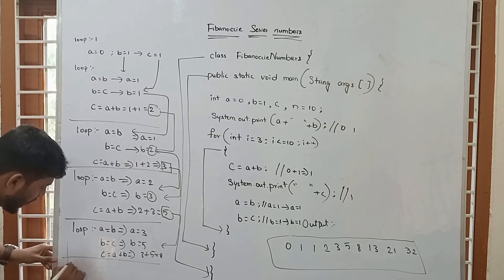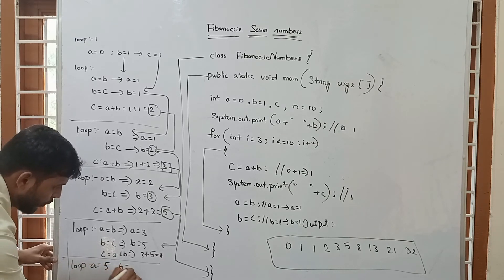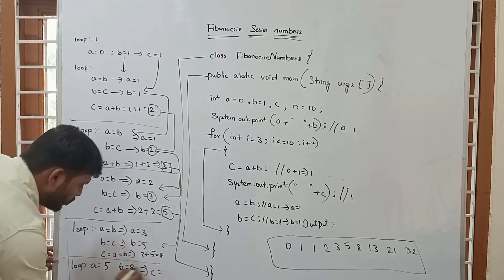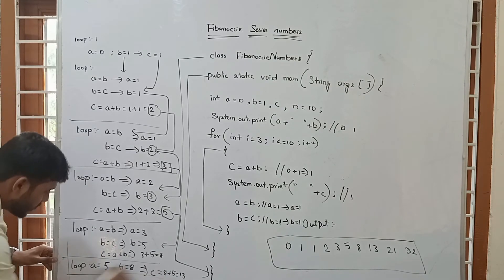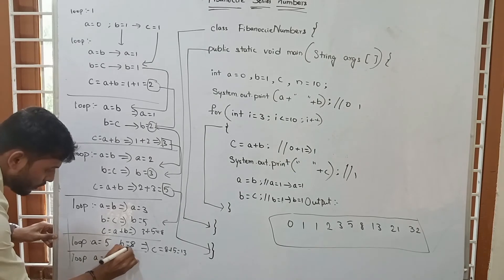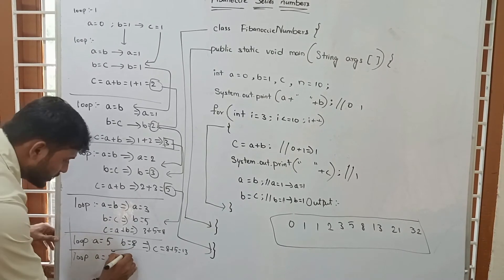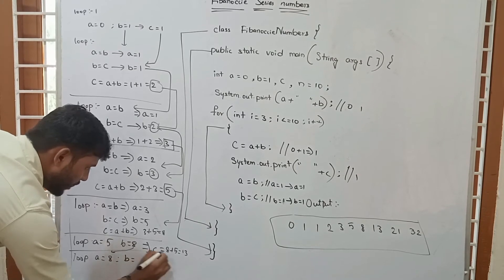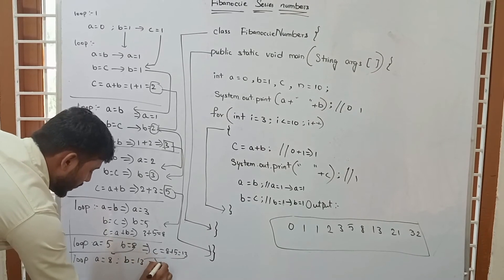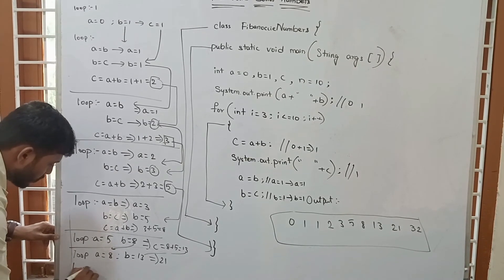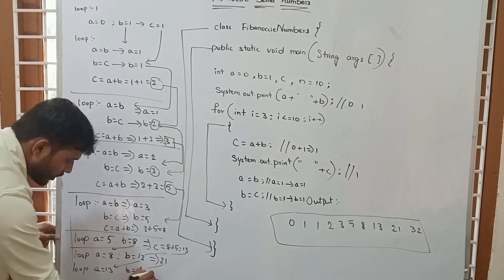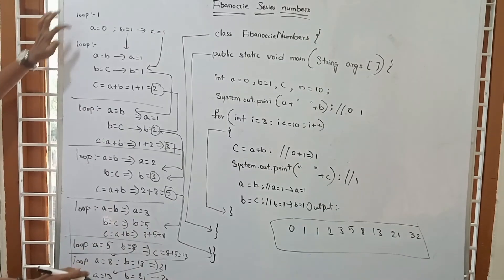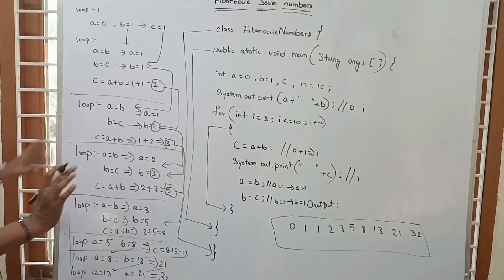The loop continues. A becomes 13, B becomes 21. So C equal to A plus B: 13 plus 21 equals 34. That is loop number 8. Now i increments and is no longer less than or equal to 10, so the condition becomes false and the loop ends. The loop executed 8 times total. Class was opened and closed, method was opened and closed, loop was opened and closed.